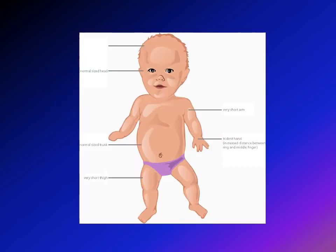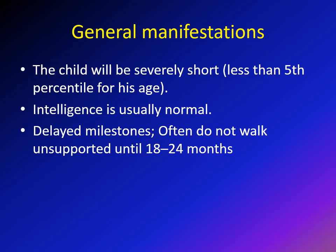The clinical picture of achondroplasia includes a normal-sized head, because the head is formed by intramembranous ossification, which is not affected in achondroplasia. The trunk is relatively normal size. The arm and thigh are very short, while the forearm and lower leg are short but to a lesser degree. If you look at the hand, you will see what's called a trident hand — an increased space between the middle and ring finger.